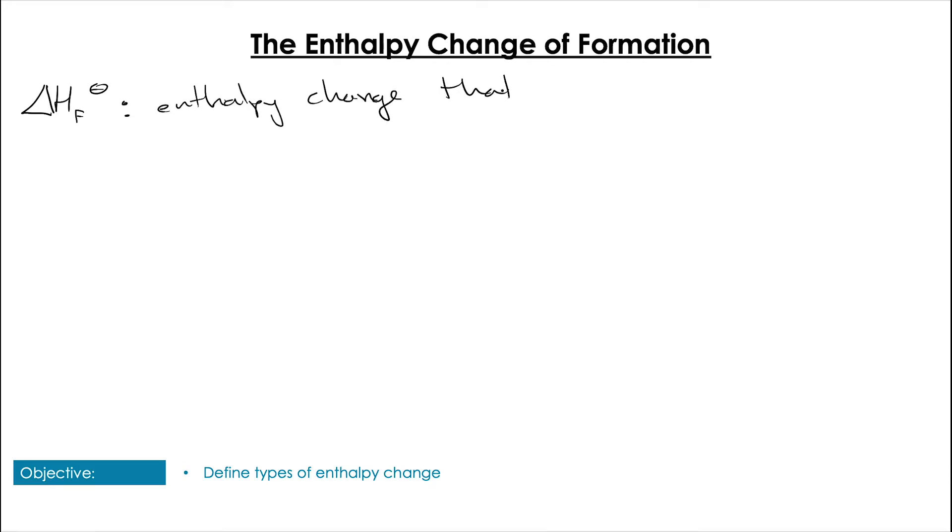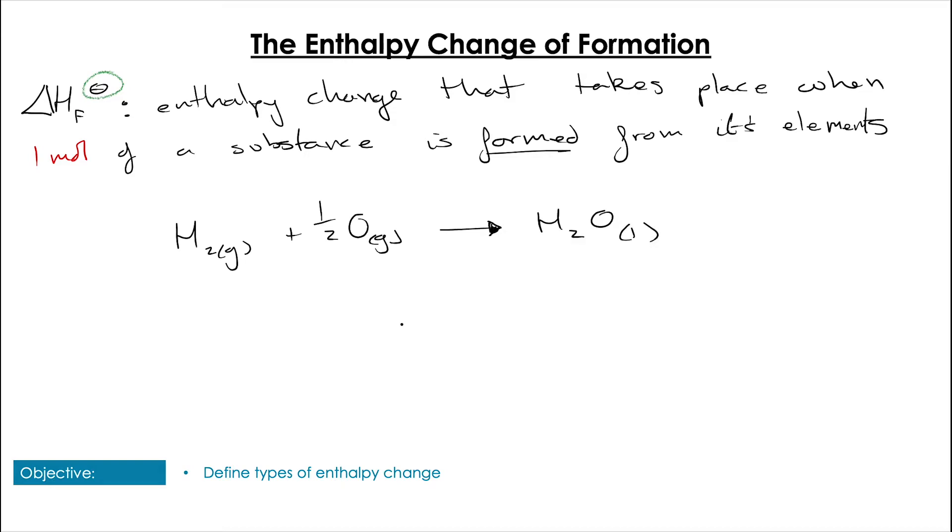If the enthalpy of combustion was the enthalpy associated with burning something, the enthalpy of formation we would expect to be making something. Indeed, the enthalpy of formation is the enthalpy change that takes place when one mole of a substance is created from its elements in their standard conditions. The reaction I already used for one mole of hydrogen with half a mole of oxygen to form one mole of water is actually a representation of an enthalpy of formation and has that value of -286 kJ/mol associated with it.